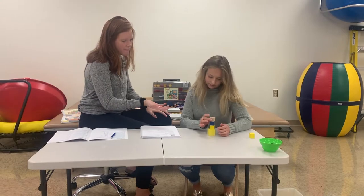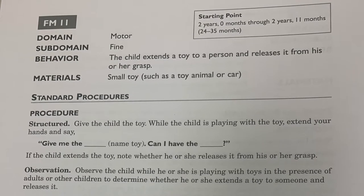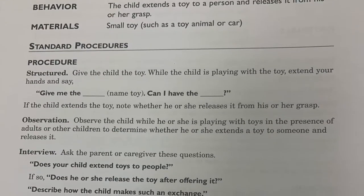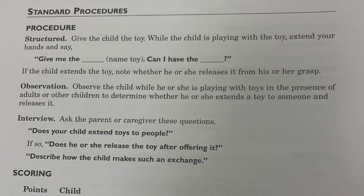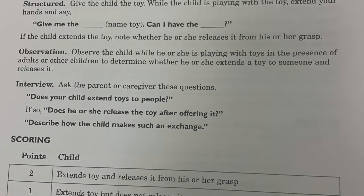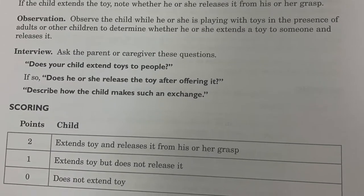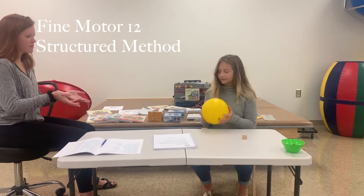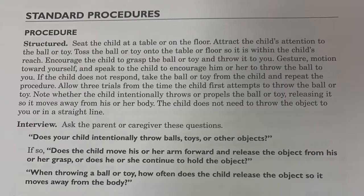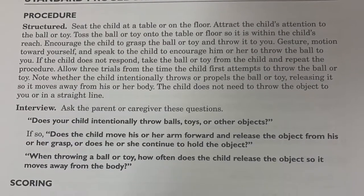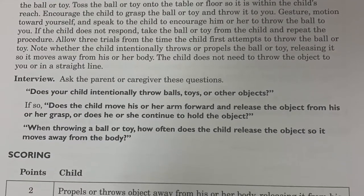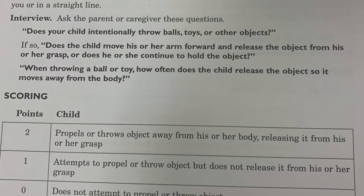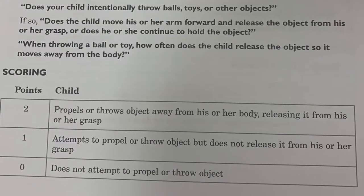Can I see the toy? Give me the toy. Thank you. This can be done in a structured clinical setting or as an observation in the home. Observe the child while playing with toys in the presence of adults or other children to determine whether he or she extends a toy to someone and releases it. In interview style, ask: Does your child extend toys to people? If so, does he or she release the toy after offering it? Describe how the child makes such an exchange. Does the child intentionally throw balls, toys, or other objects? Does the child move his or her arm forward and release the object, or continue to hold it? How often does the child release the object so it moves away from the body?